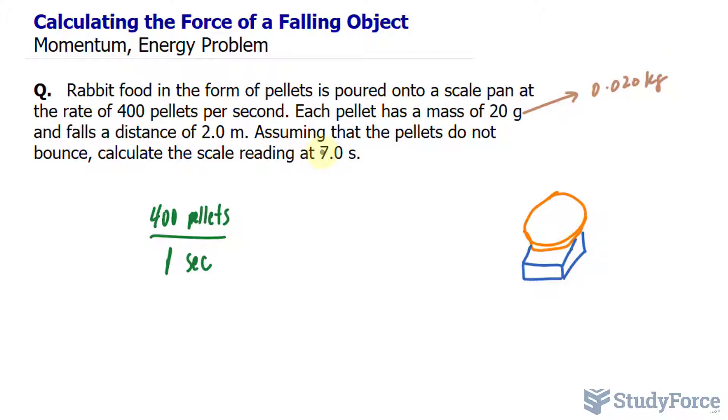And we're told to find out the reading of the scale after 7 seconds. So right now, if I multiply this by 7 seconds, I can find out how many pellets there are after 7 seconds. And I can string along this thing, which is 0.020 kilograms per pellet, to find out the total mass. So notice how this unit and this unit cancels out, and we're left with kg, which is the total mass.